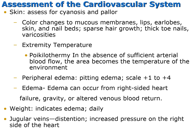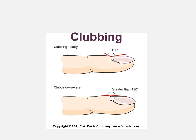Look for jugular vein distension, which can indicate increased pressure on the right side of the heart or heart failure. This diagram shows changes in the patient's fingernails over time with cardiac disease and hypoxia. In the early stages, there can be a 160-degree angle in the nails. As clubbing becomes more severe, that angle changes from 160 degrees to greater than 180 degrees — physical changes expected with cardiac disease during this type of assessment.